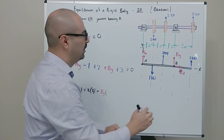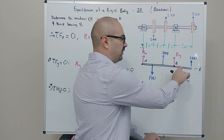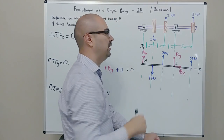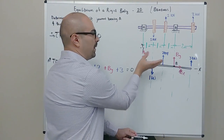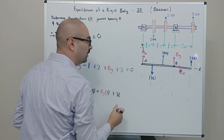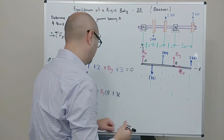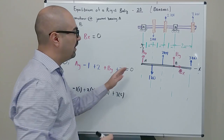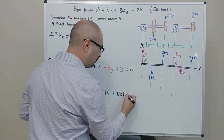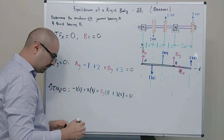The distance from A to BY is 1 plus 1 plus 1 equals 3 meters. BX has a moment arm of zero since its line of action passes through A, so it generates no moment. The 3 kilonewton force generates a positive counterclockwise moment about A. The force is 3, and the perpendicular distance from A is 1 plus 2 plus 2 equals 5 meters. There are no other forces or pre-existing couples, so the full moment equation is: minus 1(1) plus 2(2) plus BY(3) plus 3(5) = 0.